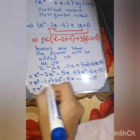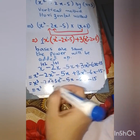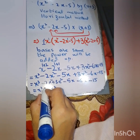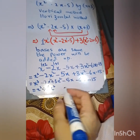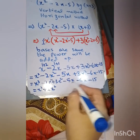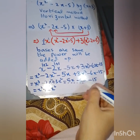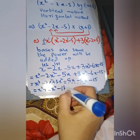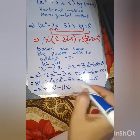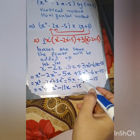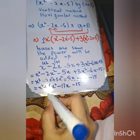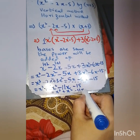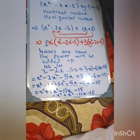Simplifying: x cubed stays. For x squared terms: 3 minus 2 equals 1, and the sign of the greater number is positive, so we get plus x squared. For x terms: 6 has the minus sign and is the greater number, so minus, and 6 minus 5 equals 11, giving minus 11x. Constant is minus 15. The final answer is x cubed plus x squared minus 11x minus 15.